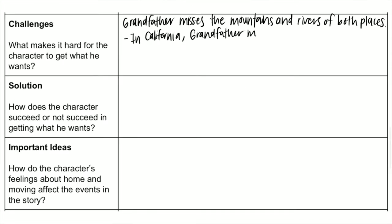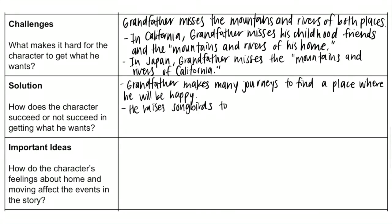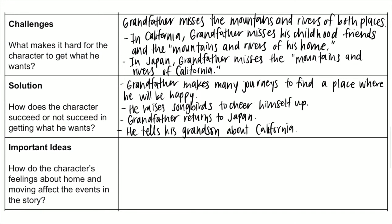For the challenges — what makes it hard for the character to get what he wants — grandfather misses the mountains and rivers of both places. In California, grandfather misses his childhood friends and the mountains and rivers of his home. In Japan, grandfather misses the mountains and rivers of California. For the solution, grandfather is able to make many journeys to find a place where he will be happy. He raises songbirds to cheer himself up, returns to Japan, and tells his grandson about California, the other home he longs for.